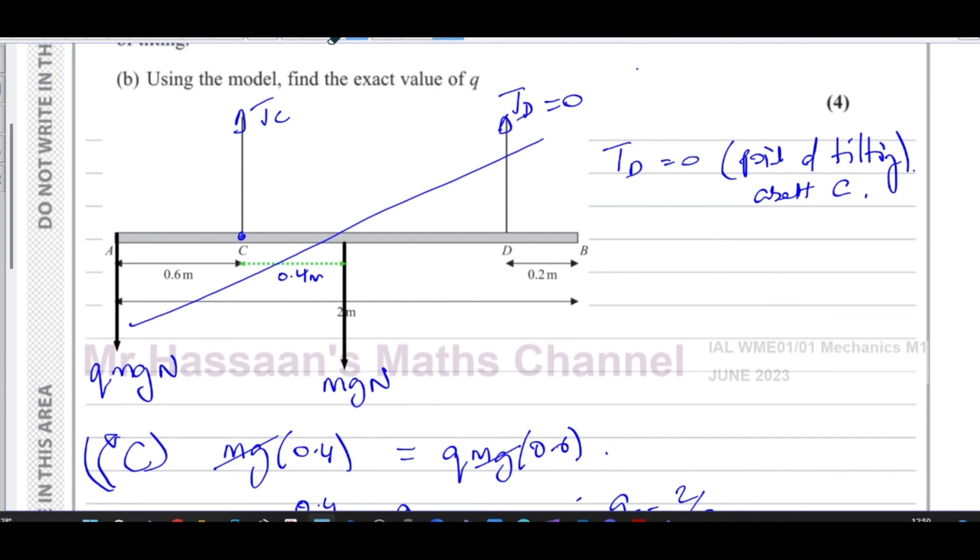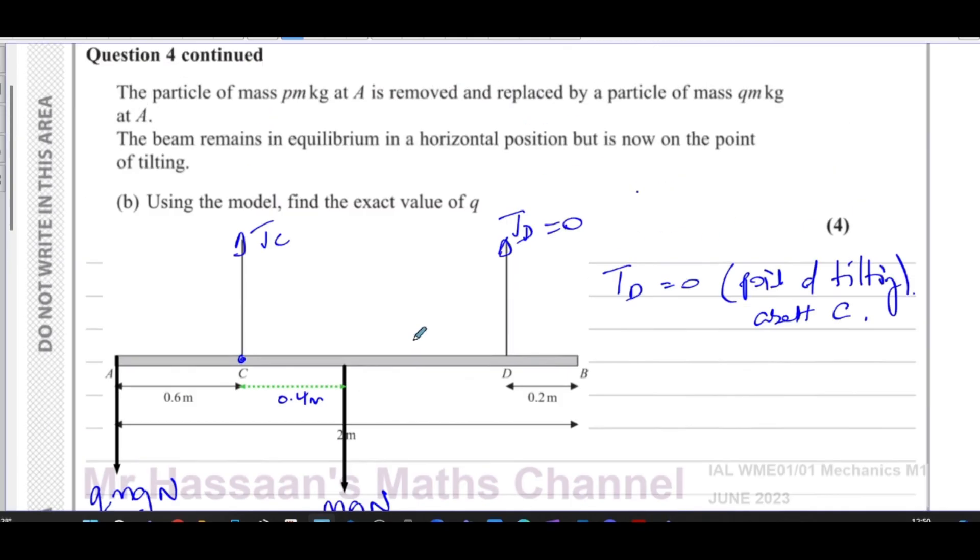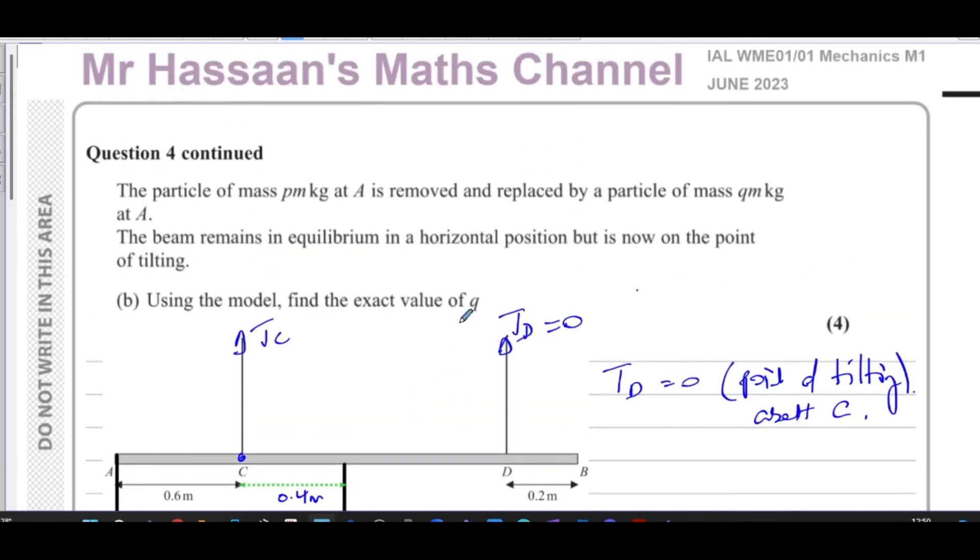It wouldn't tilt like that because of this weight. So that's why we know it's on the point of tilting about C, meaning the tension in the other string, the other side, is going to be basically the only tension acting. The tension at D was going to be 0, because it's about to kind of lift up. So the tension here is going to become slack.